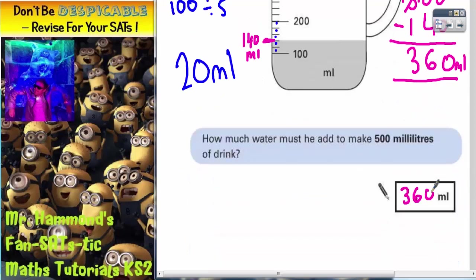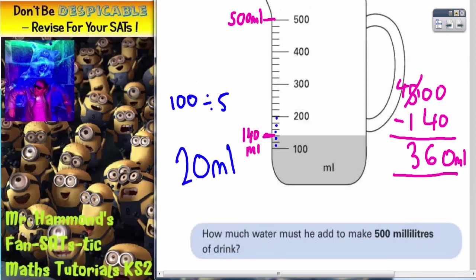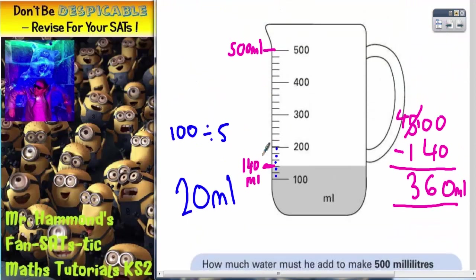So it looks as though the answer is 360 millilitres. So let's pop that in there, 360 millilitres. Another way we could have done it is that now we know each mini gap is worth 20, we could have just counted up in 20s.